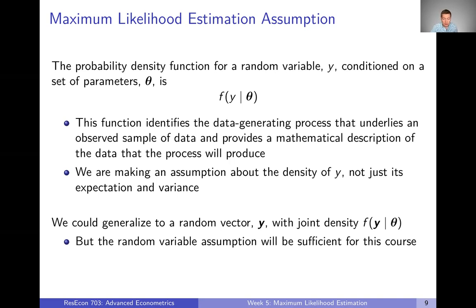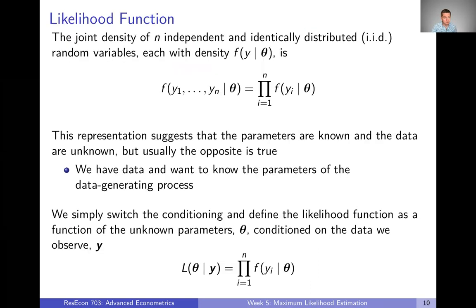We're talking about one random variable y, but we could generalize this to having a whole random vector of many y's that have a joint density, with some dependencies between them. You can do that, but for this course it's fine to stick with this simple assumption about a single random variable. If you're interested in the more complicated case, you can look at that in some econometrics books on your own.